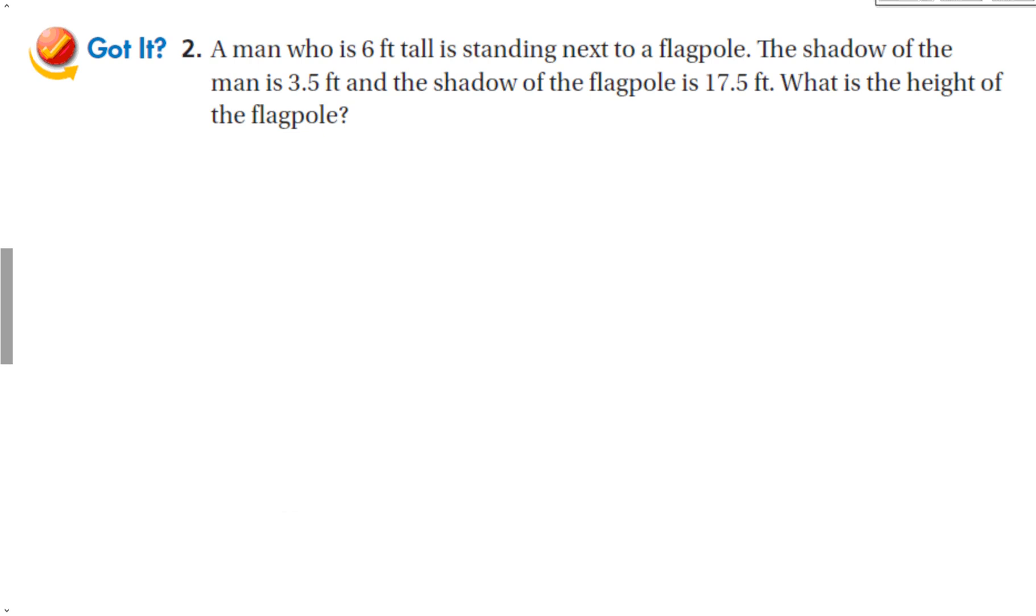Let's look at another. A man who is 6 feet tall is standing next to a flagpole. The shadow of the man is 3.5 feet. Let's draw this. We have a flagpole and a guy. The shadow of the man... first of all, this guy is 6 feet. Always helps to draw a picture. The flagpole is 17.5 feet. The shadow of the man is 3.5 feet, and the shadow of the flagpole is, oh sorry, that is the shadow of the flagpole. 17.5, that's what we're looking for, the height of the flagpole. Terrible drawing, I know, but we can still use it to solve this problem.